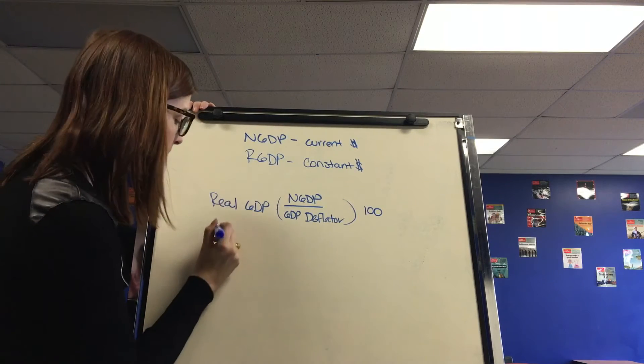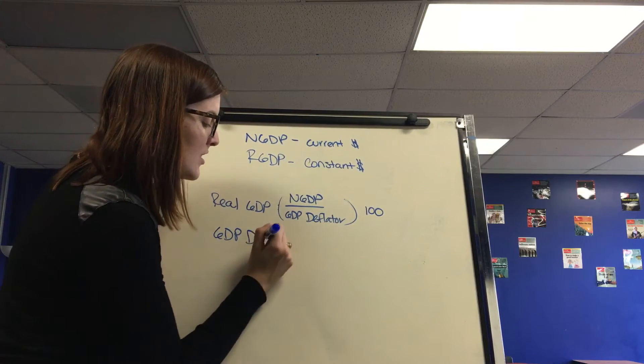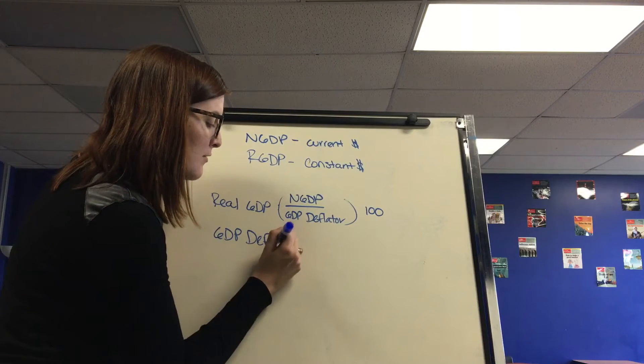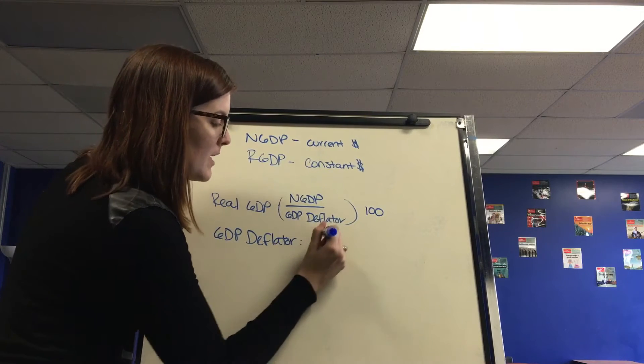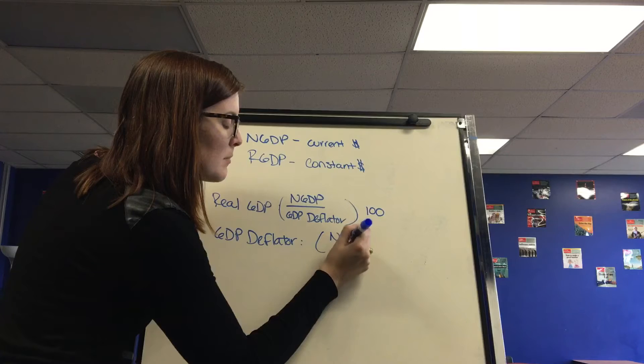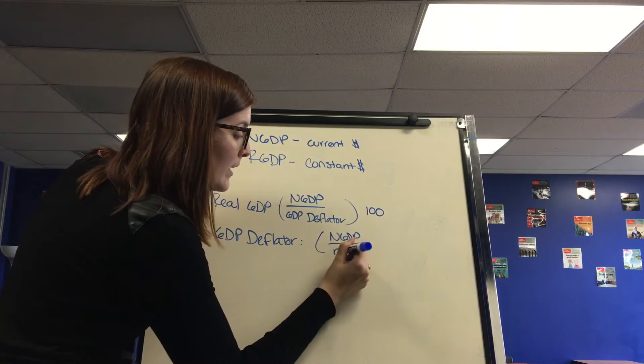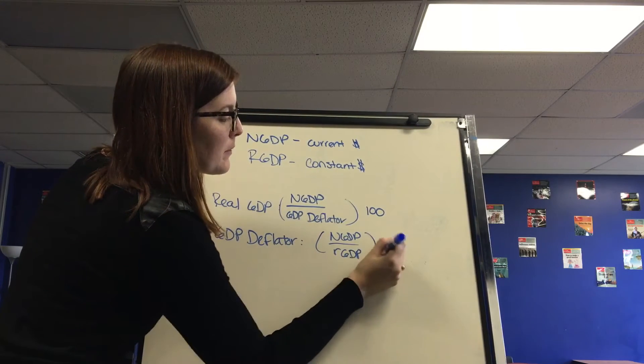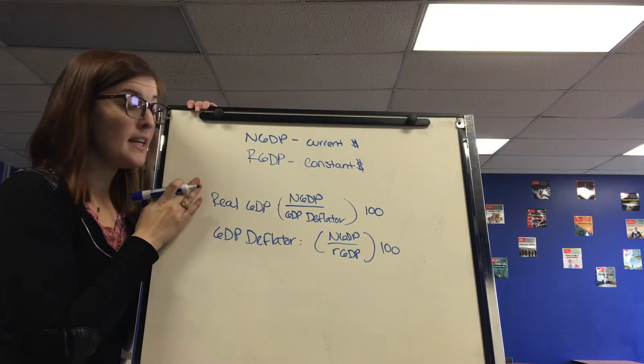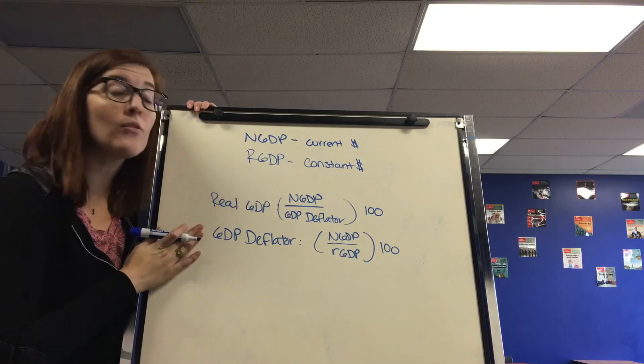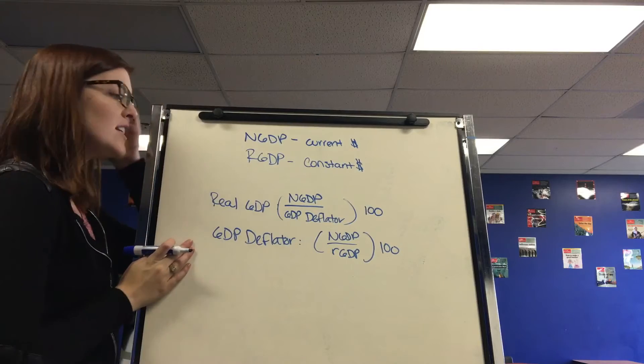Or sometimes it'll have you solve for the GDP deflator. It wants you to answer how much inflation was there within GDP. And that would again be nominal GDP on the top, over now real GDP, times by 100. And that's how you could either solve for real GDP, adjust it for inflation, or solve for the inflation within GDP.